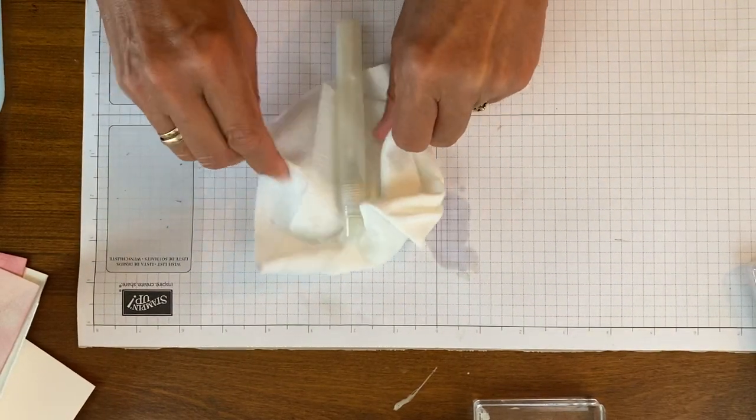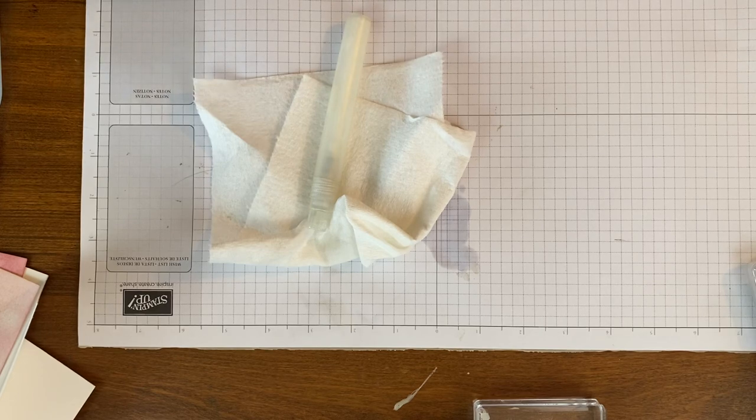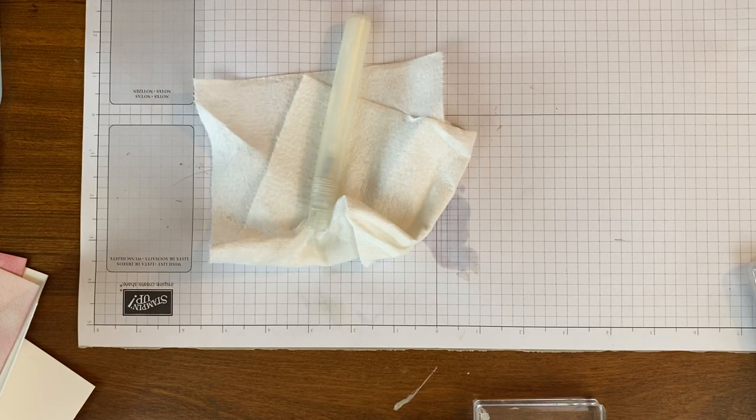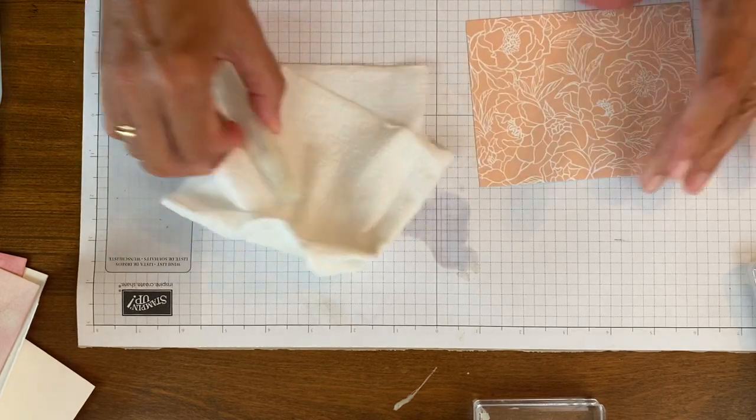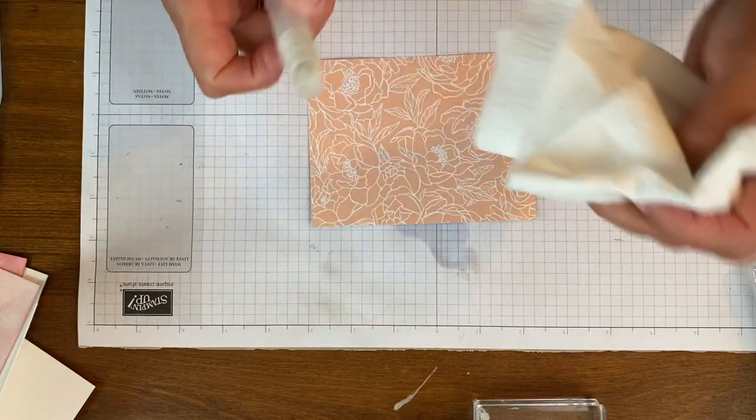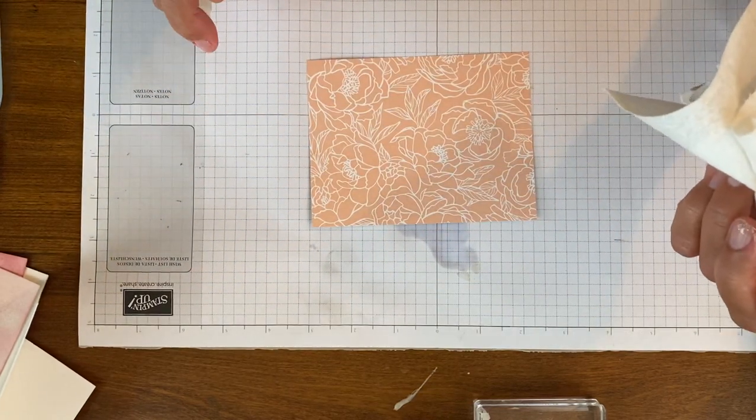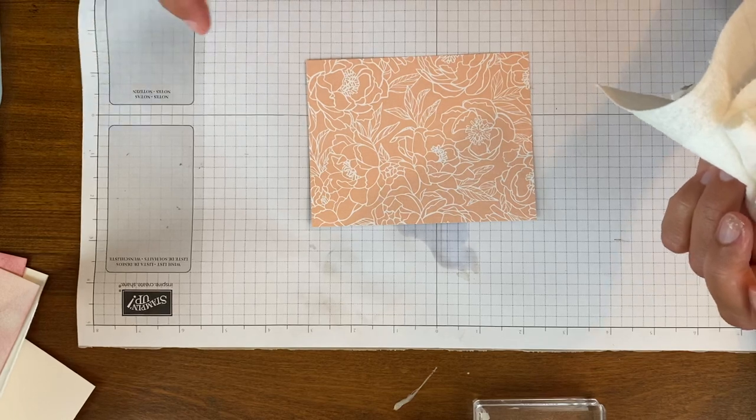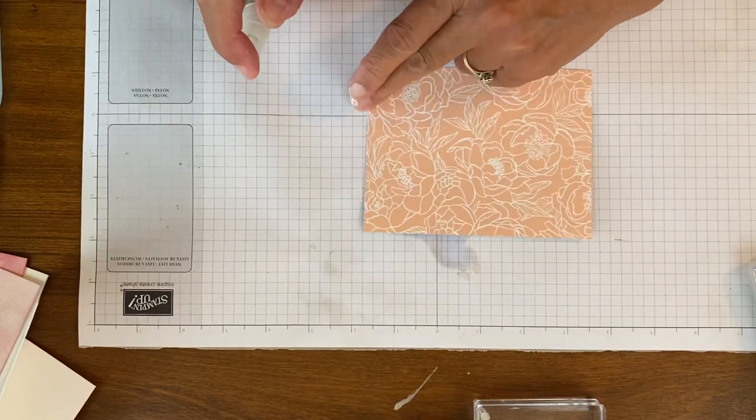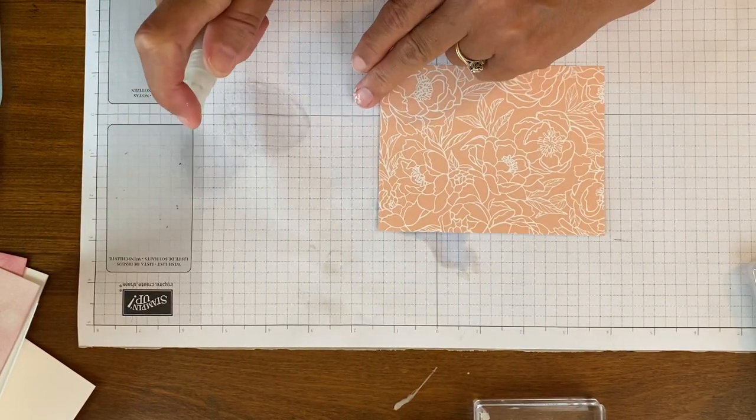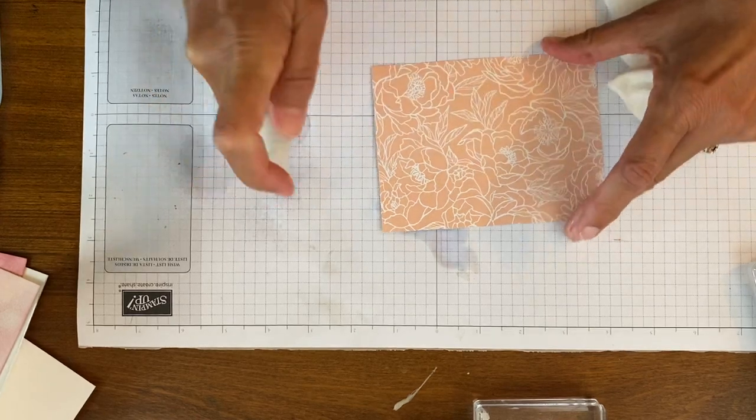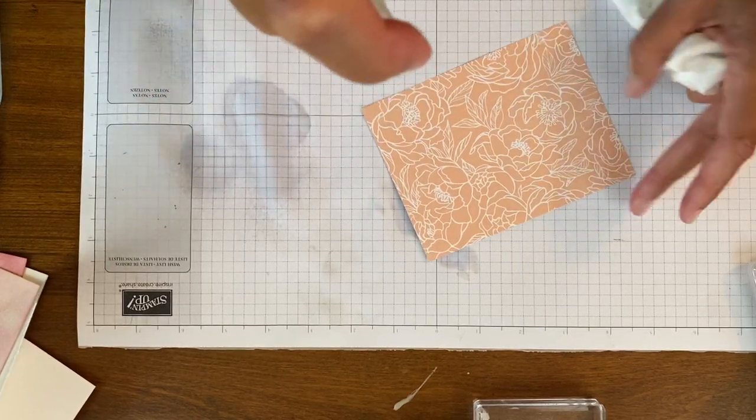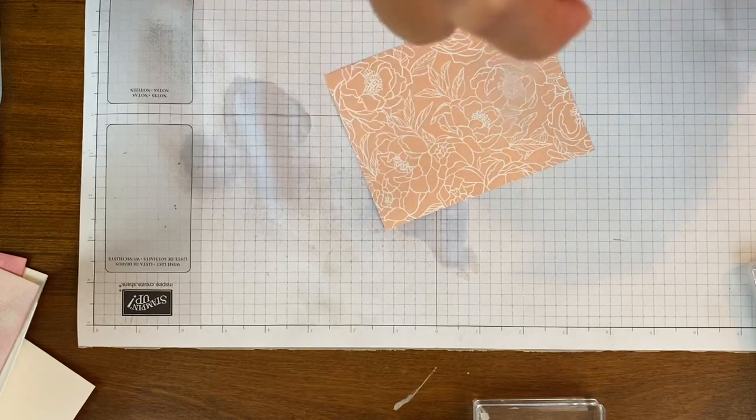Next, I'm going to take another piece of Designer Series paper from the same paper pack here. And this time I'm going to spritz. Now to start spritzing, I'm going to first go off the page because you can see it's just water first. Until I start getting the shimmer right in there.